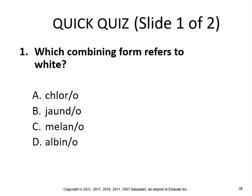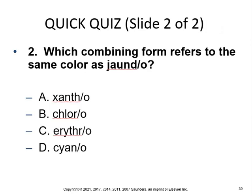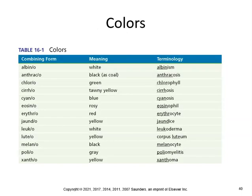Which combining form refers to white? That's D — albino. Which combining form refers to the same color as jaundice? That would be xantho. Here are good ways to memorize these colors: albi is white (albinism); anthro is black (anthracosis); chloro is green (chlorophyll); cirro is tawny yellow (cirrhosis); cyano is blue (cyanosis); erythro is red (erythrocyte); jaundo is yellow (jaundice); leuko is white (leukoderma); luteo is yellow (corpus luteum); melano is black (melanocyte); polio is gray (poliomyelitis); and xantho is yellow (xanthum).